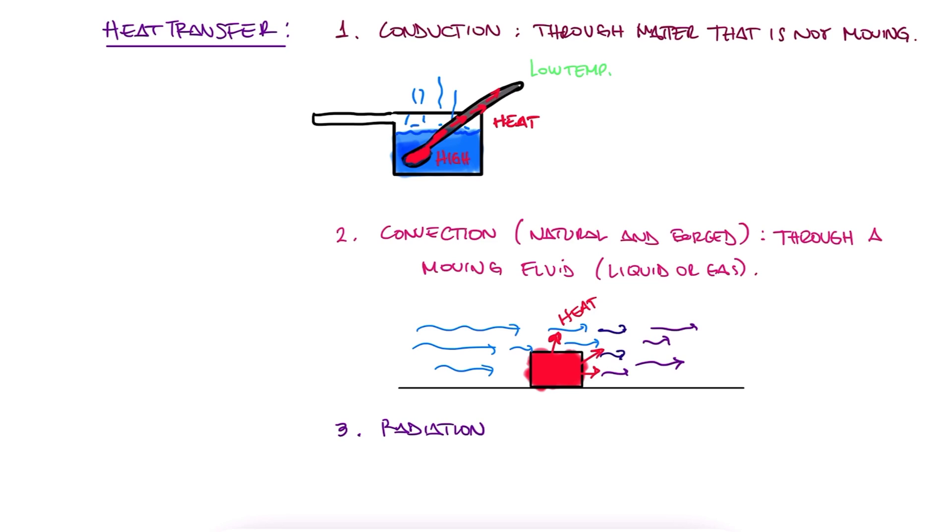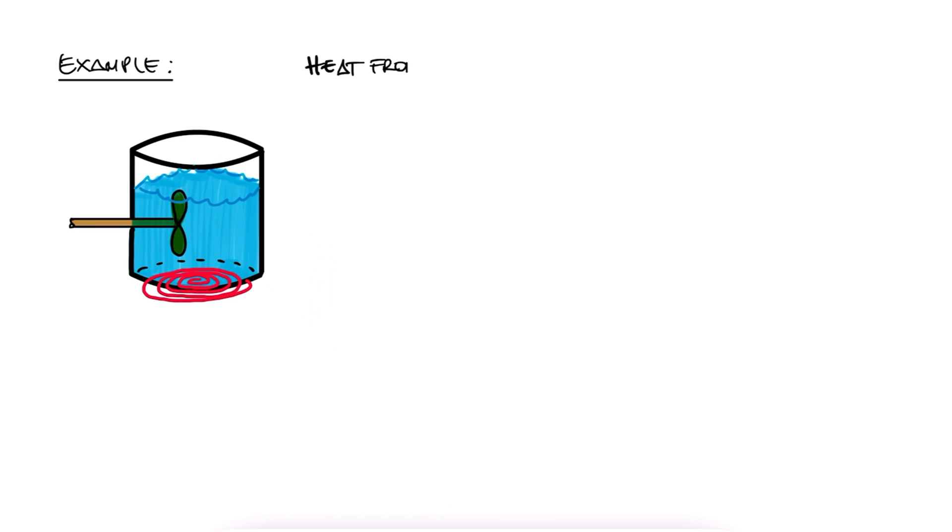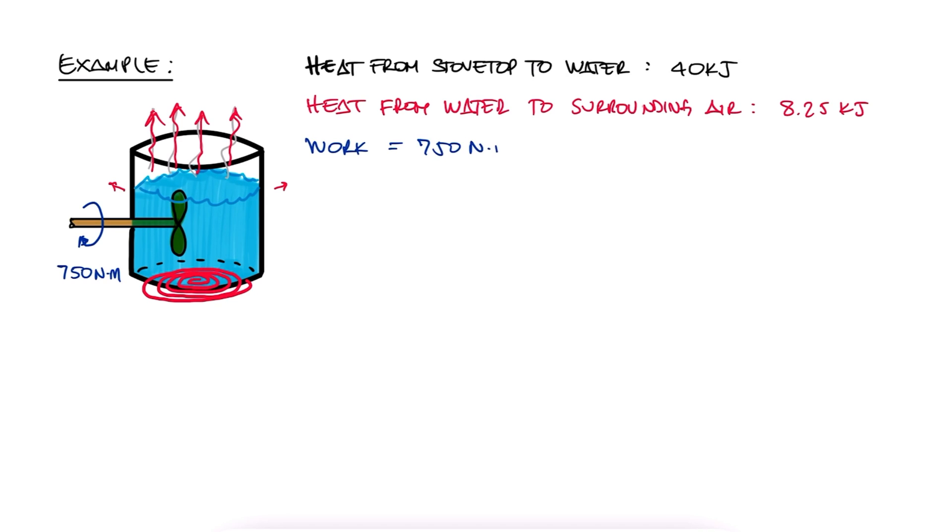Let's take a look at a very simple example regarding the first law, or conservation of energy equation, and if you want to check more complex examples on this topic, make sure to check out the links in the description below. A paddle wheel is connected to the interior of a pot filled with water, that is located on top of a stove top burner. While the pot is on the stove, 40 kilojoules of heat moves from the burner to the water, 8.25 kilojoules of heat are lost to the surrounding air, and the paddle wheel work is measured to be 750 newton meters. What is the final energy of the system if its initial energy was 16 kilojoules?